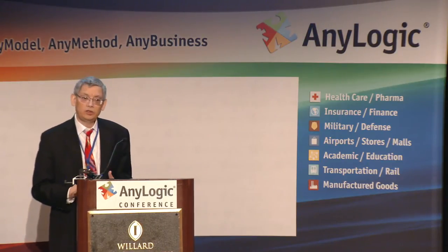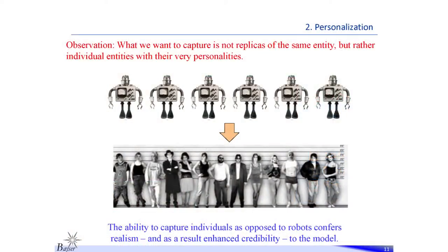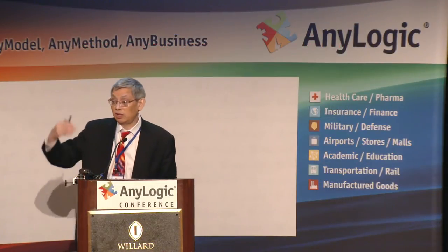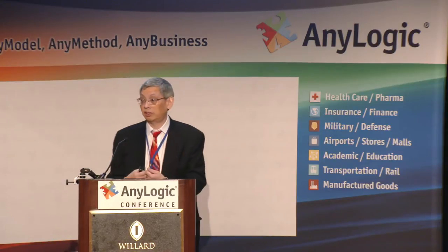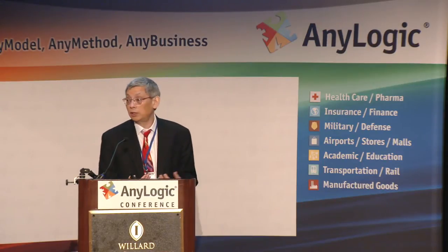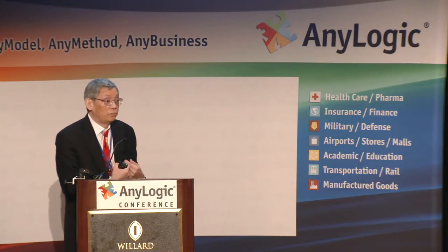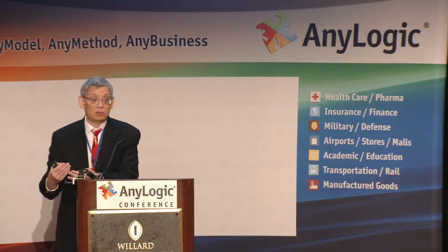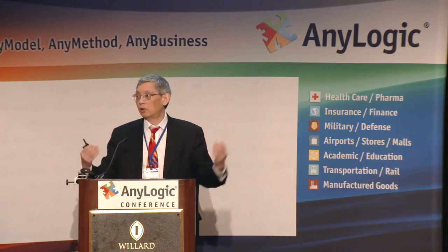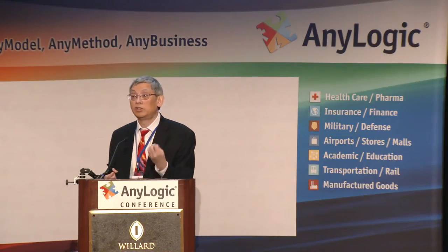The second reason is we wanted a model where agents are not robot replicas of each other. Through vector variables we can import different features for each agent. For instance, the propensity of a doctor to write a prescription can be distributed normally — or any distribution you want. The patient can be patient or impatient, leaving the waiting room if tired of waiting. This makes the model much more realistic and, as a result, much more credible in terms of results.